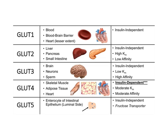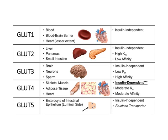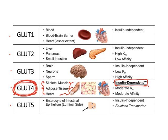Now see this glucose transporter — it is GLUT4, glucose transporter 4. There are a lot of transporters, but the important one is glucose transporter 4. The reason is it is insulin dependent — meaning if insulin is not there, glucose will not be taken up into the cell. Skeletal muscle, adipose, and heart all have glucose transporter 4. So all these three tissues, without insulin, cannot get glucose.